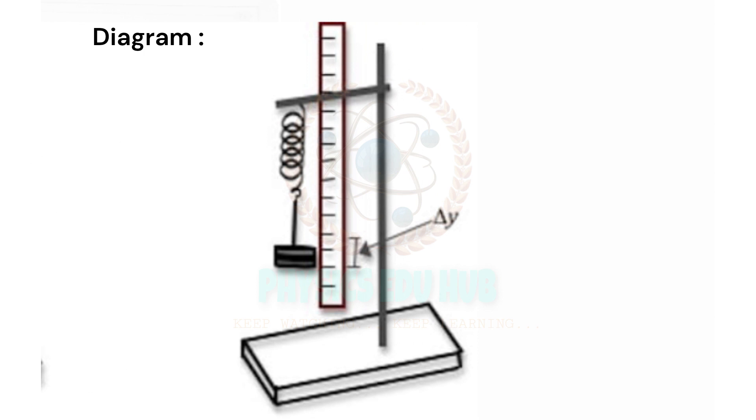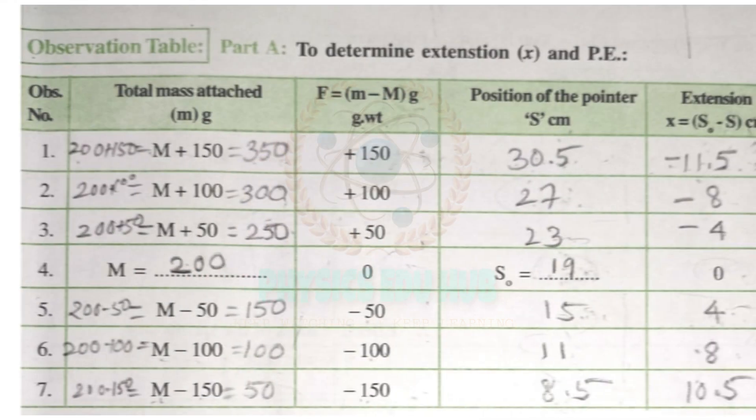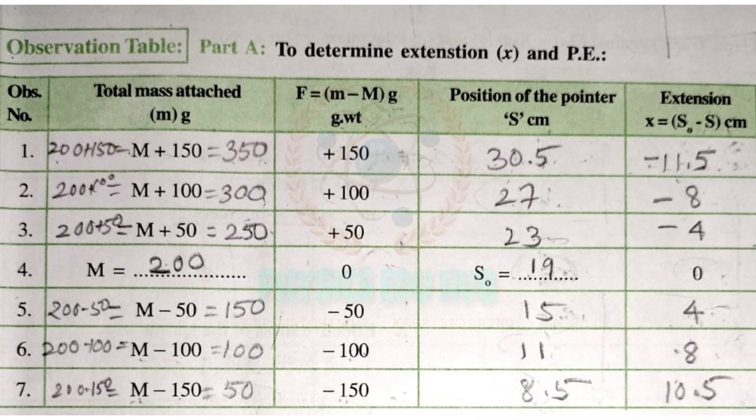First draw a diagram. Next, start taking readings by adding or reducing mass according to the observation table and note down the position of the pointer.